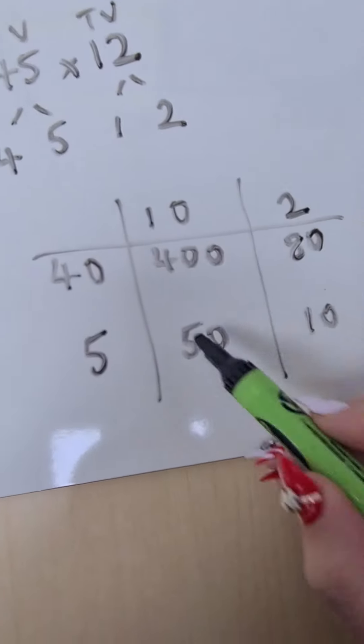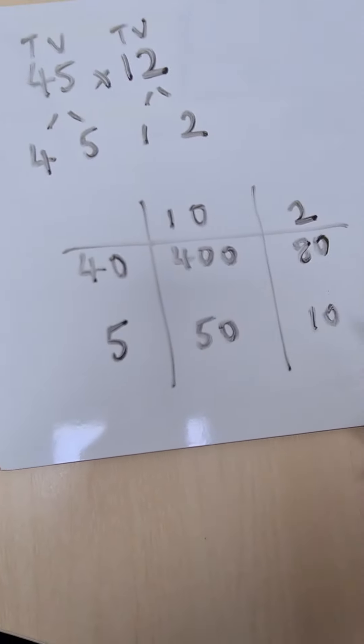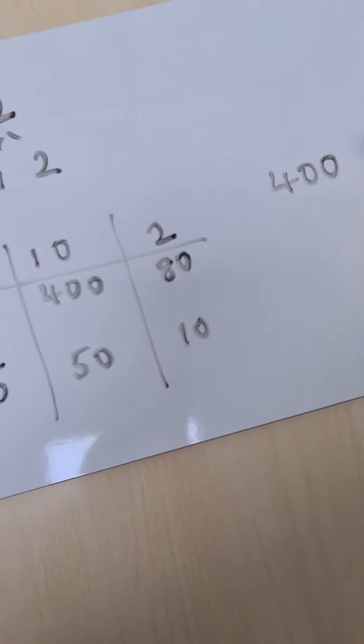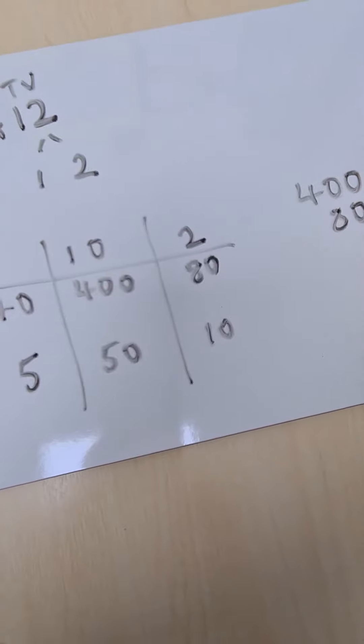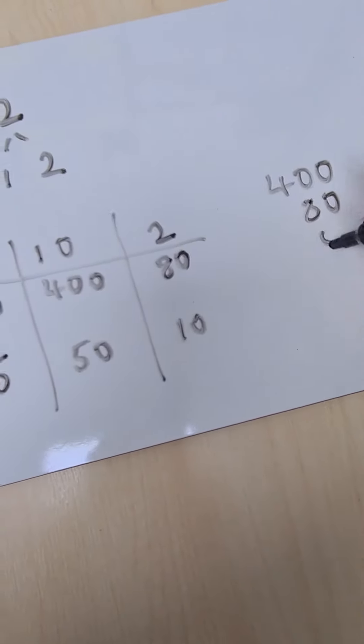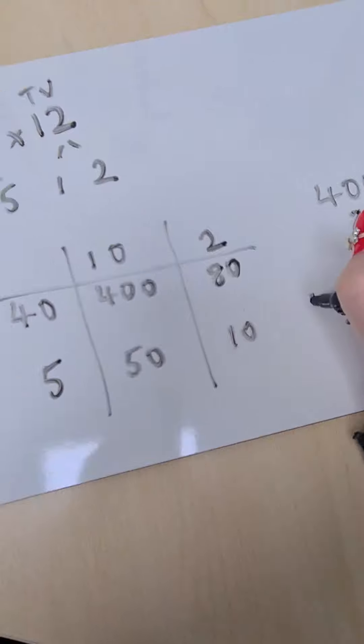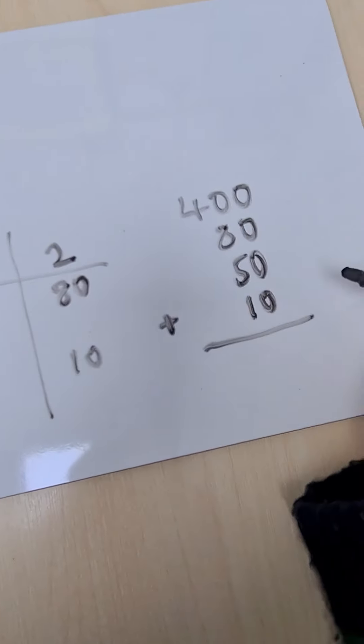Some children might be able to mentally do this very quickly. Some children might need to form a vertical column addition by ensuring all of the digits are in the right column and completing the addition in this way.